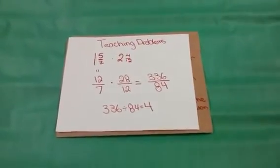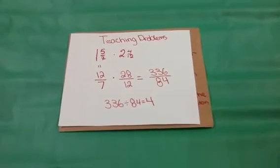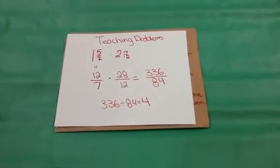Teaching problem: 1 and 5 over 7 times 2 and 4 over 12.